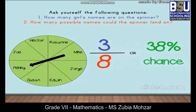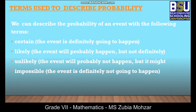So that would be 37.5 or 38 percent. Excellent! Now we will learn the different terms which are used to describe probability. We can describe the probability of an event with the following terms: certain, likely, unlikely, and impossible. To get a better understanding of these terms, we will look at the likelihood scale. Do you know what the likelihood scale is?